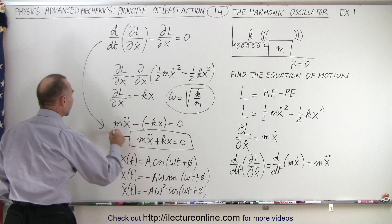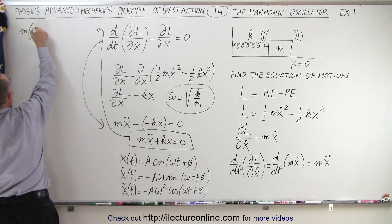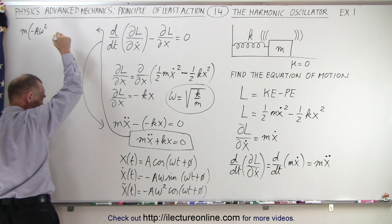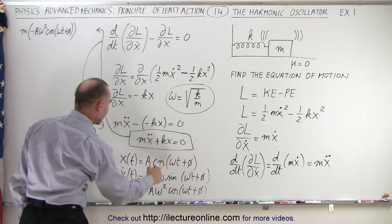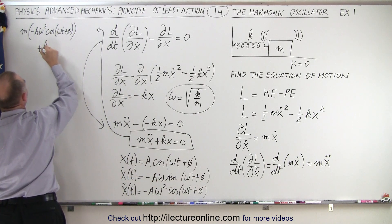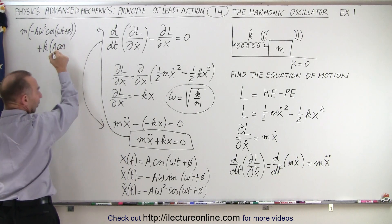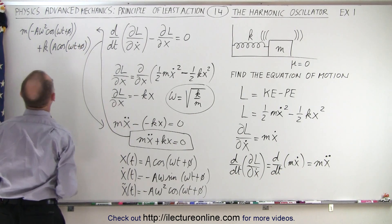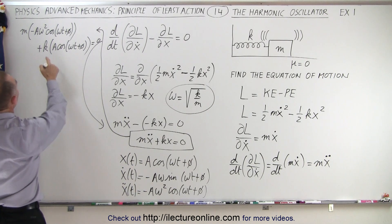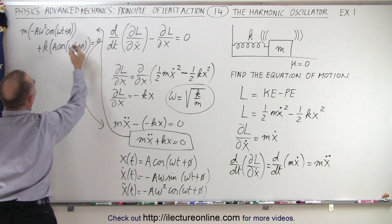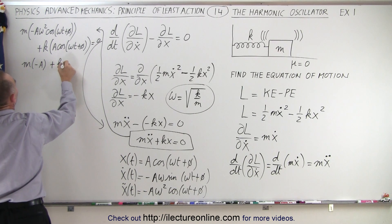Let's plug that back into the original equation to verify. We have m times x-double-dot, which is minus A omega squared times the cosine of omega t plus the phase angle, plus k times the original x, which is A times the cosine of omega t plus the phase angle, and that should equal zero. Notice we have the cosine of omega t plus phase angle on both sides, so we can factor that out.